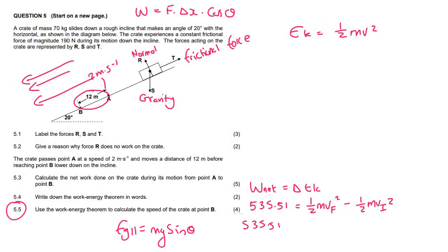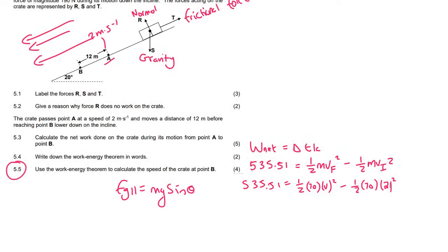And so 535.51 is equal to a half. Now the mass is 70. The final velocity is what we are trying to find. The velocity initial at point A was 2 meters per second. And then remember, squared. And so now I'm just taking everything to the left-hand side. And so on the left, so what I did is I took this over to the left. And so what I get is 675.51 equals to a half of 70 is 35. I'll then divide by 35. And then take the square root. And we should get a final velocity of 4.39 meters per second. 4.39 meters per second.